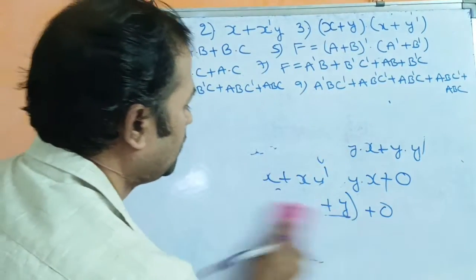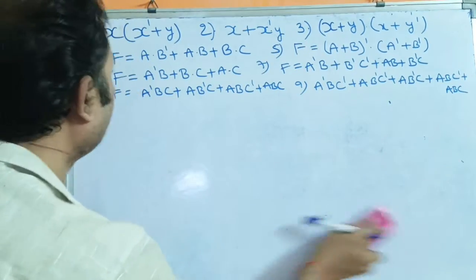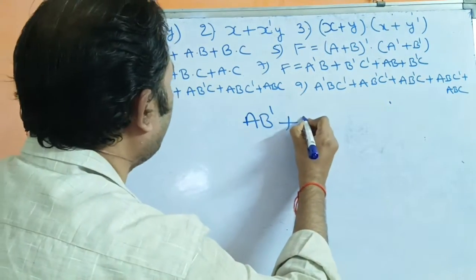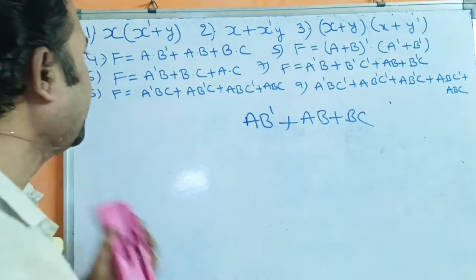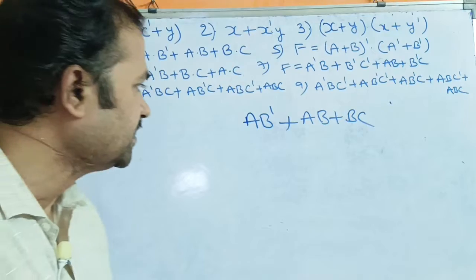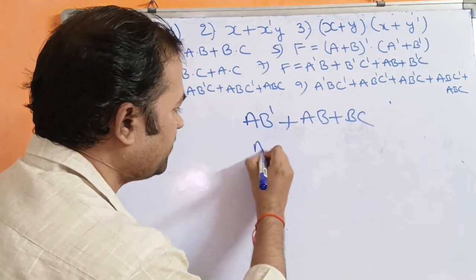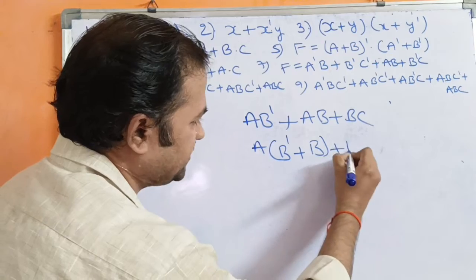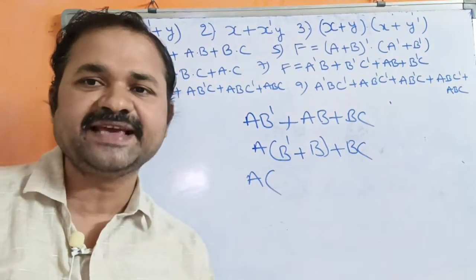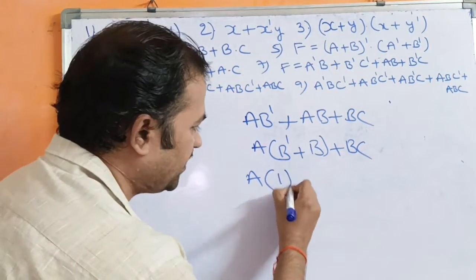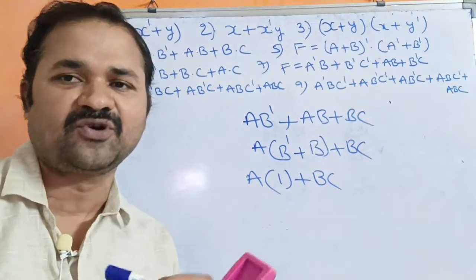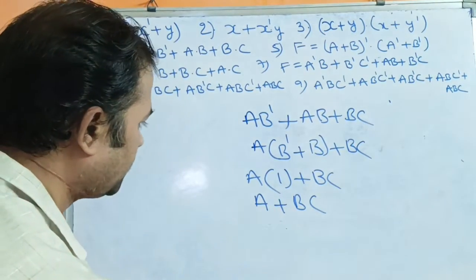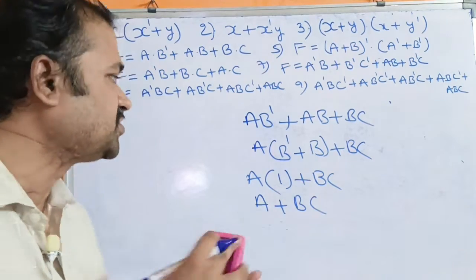Now let us see the fourth example: F = AB̄ + AB + BC. Observing the first two terms, A is common, giving A(B̄ + B) + BC. The formula B̄ + B = 1, so A·1 + BC = A + BC. The solution for the fourth problem is A + BC.